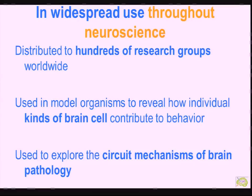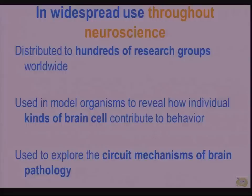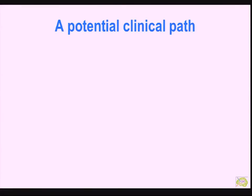To summarize this first part: these reagents have become very widespread. Our group at MIT has disseminated these tools to almost 400 groups around the world working on different neuroscience and clinical questions. They're in widespread use both for revealing how cells work in the context of circuits and for exploring mechanisms of brain pathology. We want to use these ultra-precise tools to figure out if we can treat brain disorders, where there is a very large unmet need.